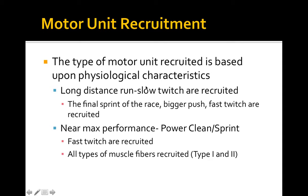The type of motor unit recruited is based on the physiological demands of the activity. A long distance run predominantly recruits type 1 slow twitch muscle fibers. Near the end of a race with a final kick, type 2A and even type 2X may briefly come into play — but those can't sustain an entire long distance run. For near-max performance like a power clean or a sprint, fast twitch fibers are recruited. The order remains: type 1 fires first, then type 2A, and finally type 2X steps up as the big dogs to get the job done.